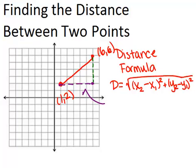So, x2 minus x1 will be 1, 2, 3, 4, 5. Now, we also could have gotten that by looking at the coordinates themselves. The x-coordinates are 6 and 1, and 6 minus 1 equals 5.